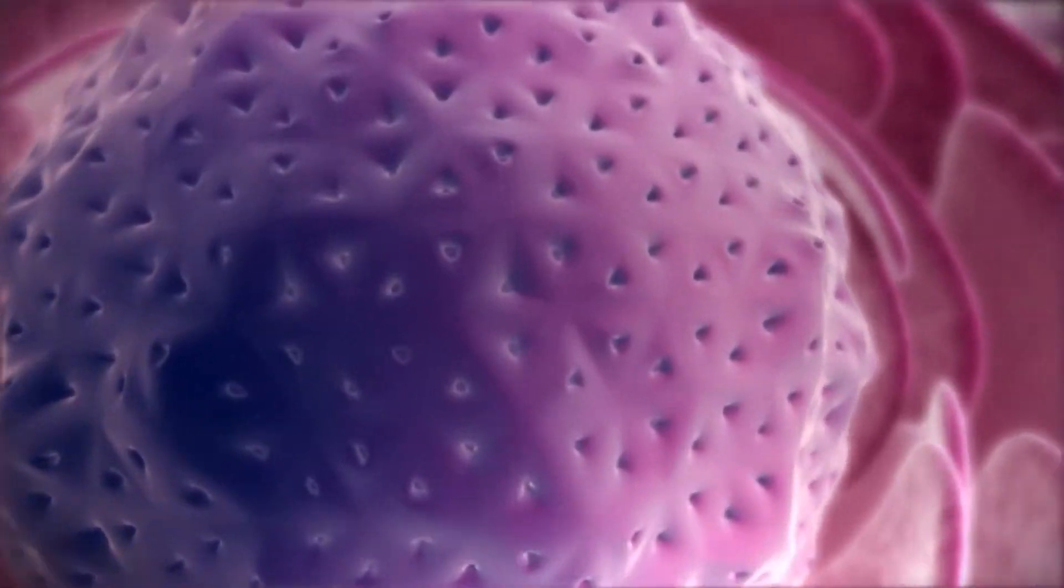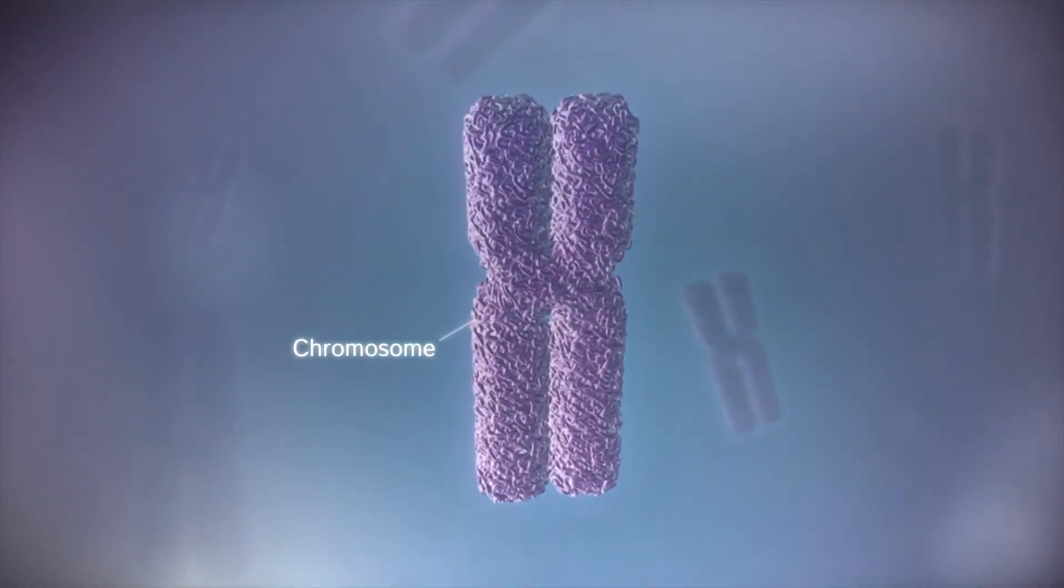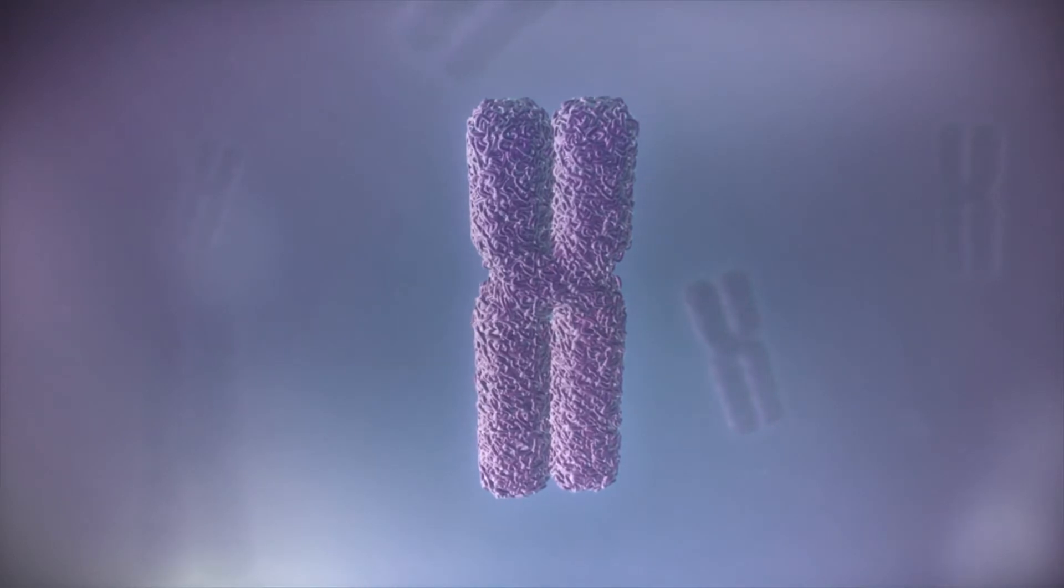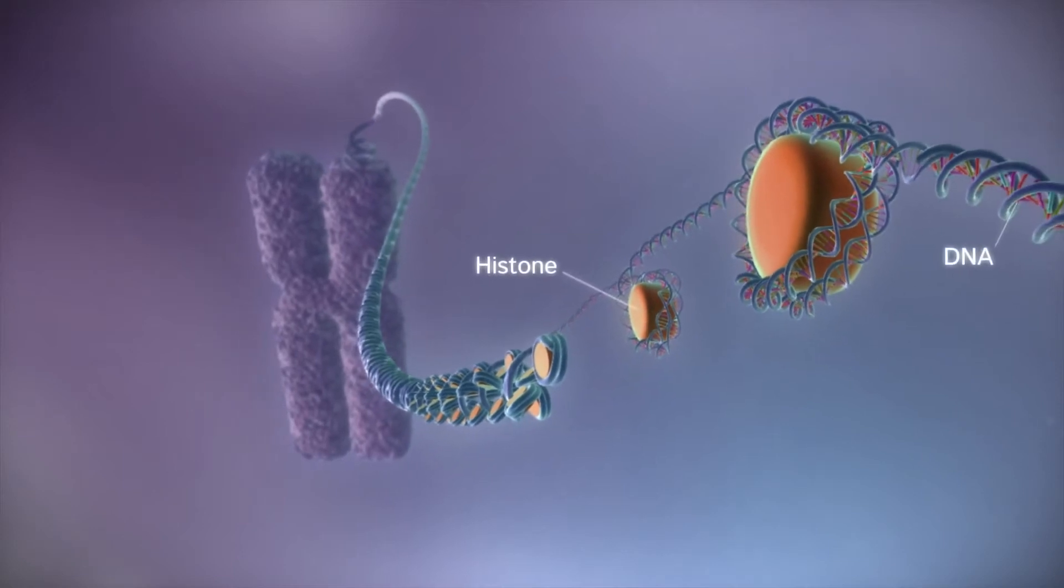In humans the genome is split between 23 pairs of chromosomes. Each chromosome contains a long strand of DNA, tightly packaged around proteins called histones.